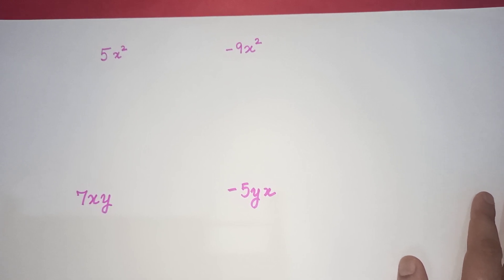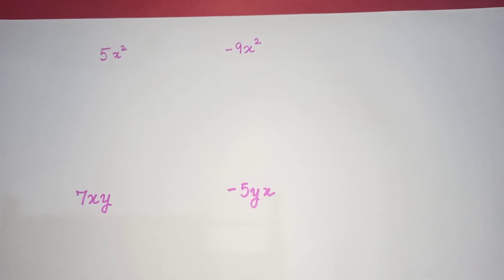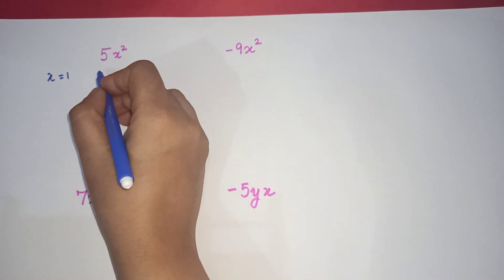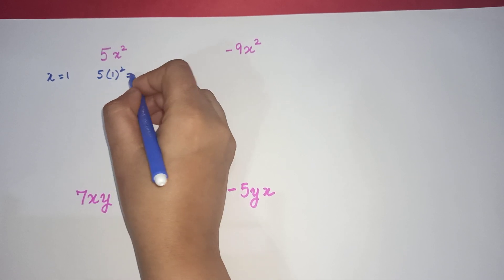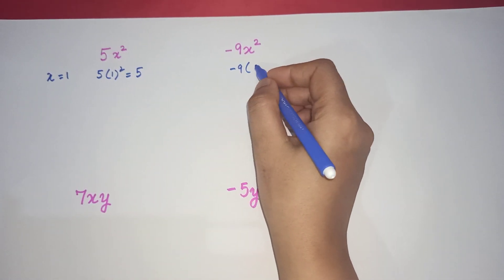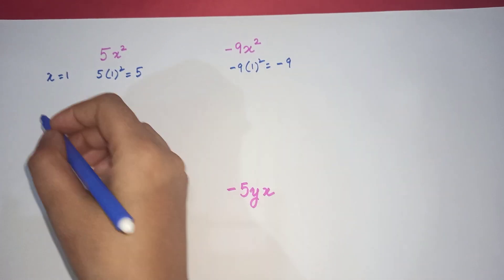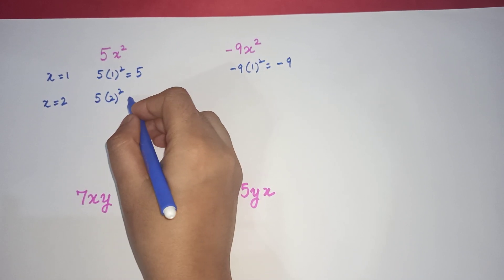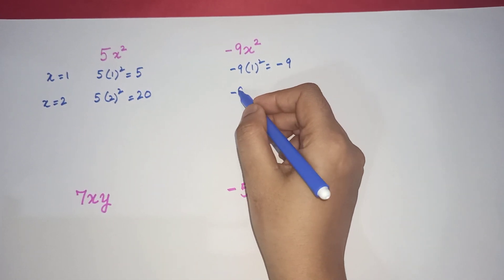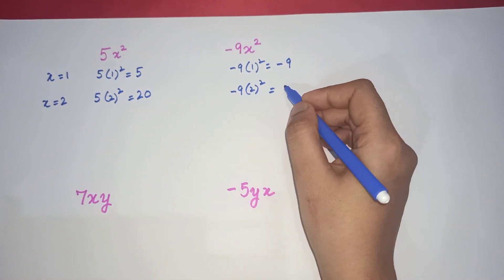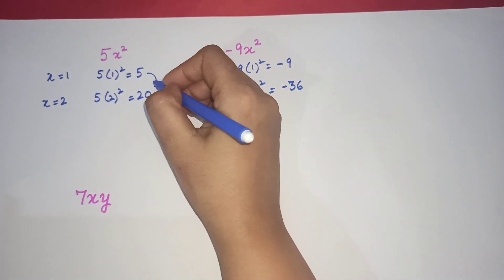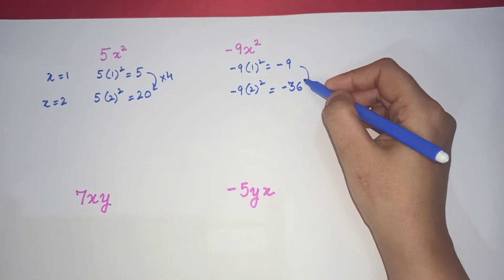I have 2 more terms: 5x squared and negative 9x squared. Let's check whether these are growing in a similar fashion or not. Let's take x as 1 and see how these two respond. Negative 9 times 1 squared is negative 9. Now let's take x as 2: 5 times 2 squared is 20, and negative 9 times 2 squared is negative 36. We can see that 5 is getting multiplied by 4 and negative 9 is also getting multiplied by 4.